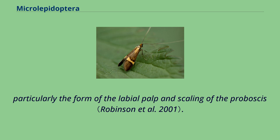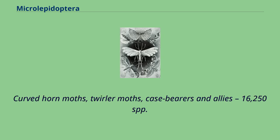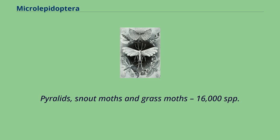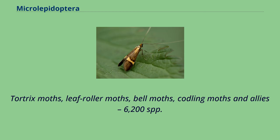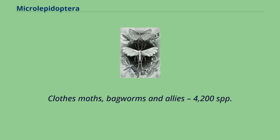Particularly the form of the labial palp and scaling of the proboscis. 1. Curved horn moths, twirler moths, case bearers and allies — 16,250 spp. 2. Pyrolids, snout moths and grass moths — 16,000 spp. 3. Tortrix moths, leaf roller moths, bell moths, codling moths and allies — 6,200 spp. 4. Clothes moths, bagworms and allies — 4,200 spp.